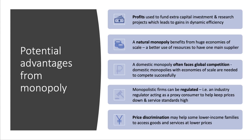A natural monopoly may benefit from big economies of scale and it may be justified to have one major supplier — perhaps state-owned — as a better use of resources to fully exploit those economies of scale. Interestingly, a domestic monopoly often does face global competition, depending on how you define the market. In that case, you need a domestic firm to have scale and market power to compete successfully with large transnational companies.